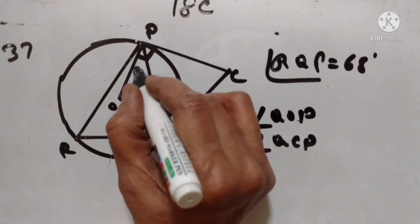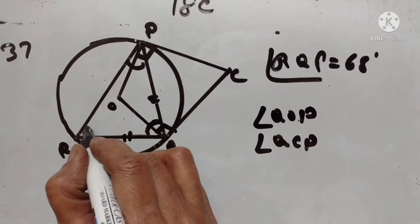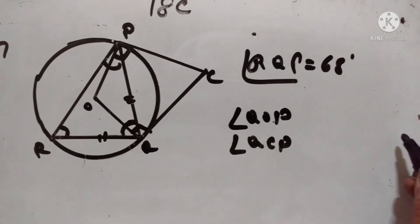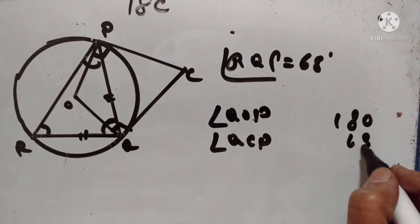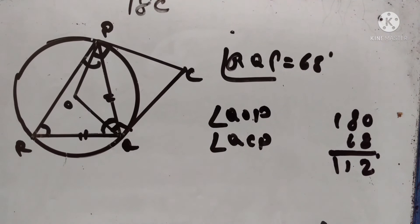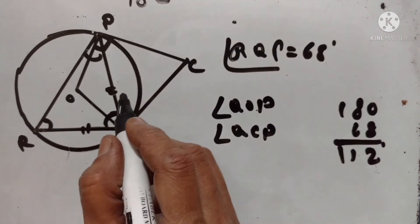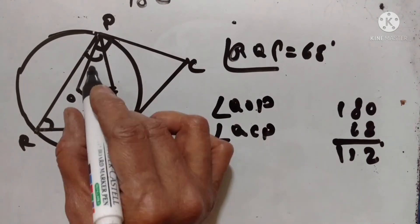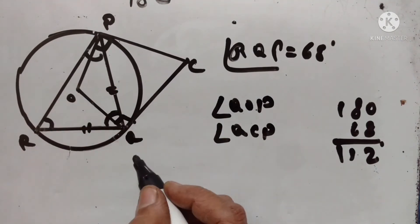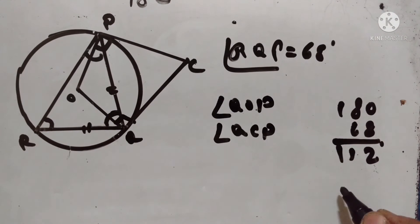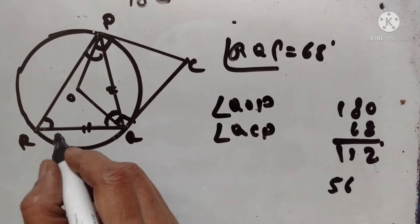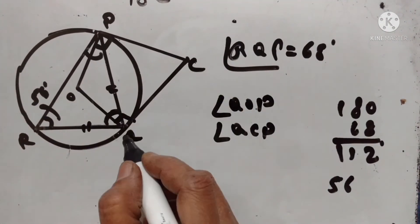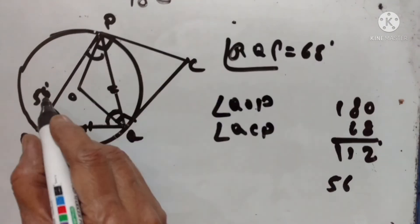Since PQR is an isosceles triangle, angle QPR plus angle QRP equals 180 minus 68 equals 112 degrees. The base angles are equal, so 2X equals 112, giving X equals 56 degrees. Therefore, angle QRP equals 56 degrees.